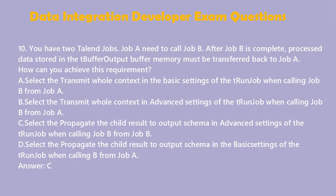Question 10: You have two Talend jobs. Job A needs to call Job B, and after Job B is complete, processed data stored in the tBufferOutput buffer memory must be transferred back to Job A. How can you achieve this? A. Select Transmit Whole Context in the basic settings of the tRunJob when calling Job B from Job A. B. Select Transmit Whole Context in advanced settings of the tRunJob when calling Job B from Job A. C. Select Propagate the Child Result to Output Schema in advanced settings of the tRunJob when calling Job B from Job A. D. Select Propagate the Child Result to Output Schema in the basic settings of the tRunJob when calling Job B from Job A. Answer: C.